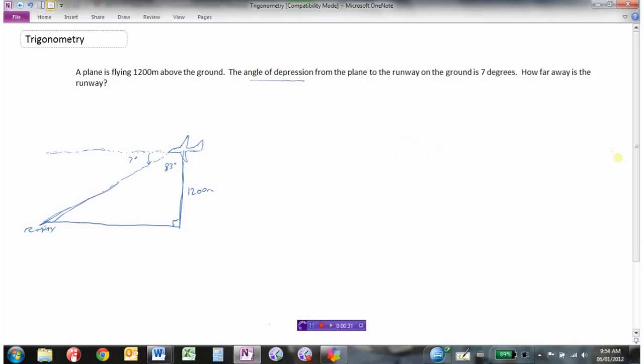Now we can figure this out. We can start labeling our sides. So we have this angle. This would be the hypotenuse, opposite the 90 degree angle. This side here would be the opposite side, and this would be the adjacent side. Let's call this L. This is what we're wanting to find. How far away is the runway? So what is this length?